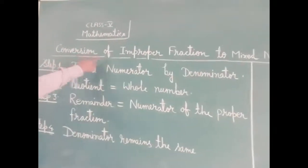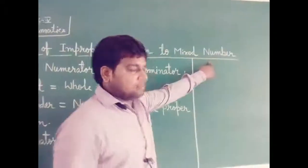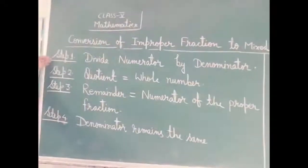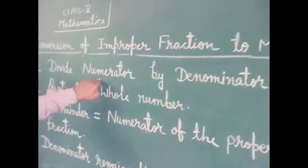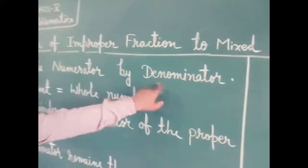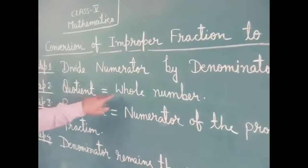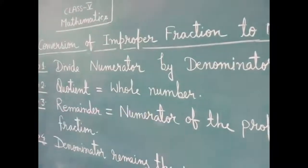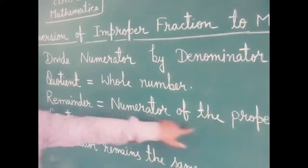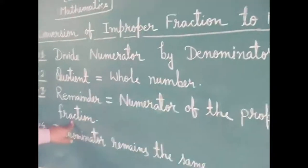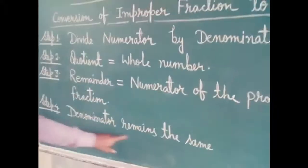Conversion of improper fraction to mixed number — see the steps. Step 1: divide numerator by denominator. Step 2: the quotient is the whole number. Step 3: the remainder is the numerator of the proper fraction. Step 4: the denominator remains the same.